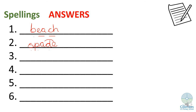Number three was 'close' — C, L, O, S, E — close. And with our sound buttons. Number four was 'kite' — K, I, T, E — kite. And with the sound buttons: K, I, T, E — kite.